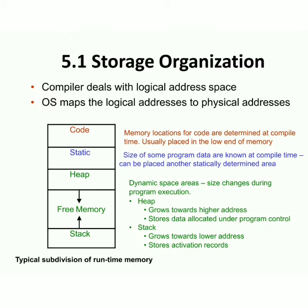The compiler deals with the logical address space. The OS maps the logical address space to the physical address space, and the compiler allocates this block of memory, which is divided into: code area, static area, heap area, free memory, and stack. The code area is at the low end of memory, and the size of the program is known at compile time.